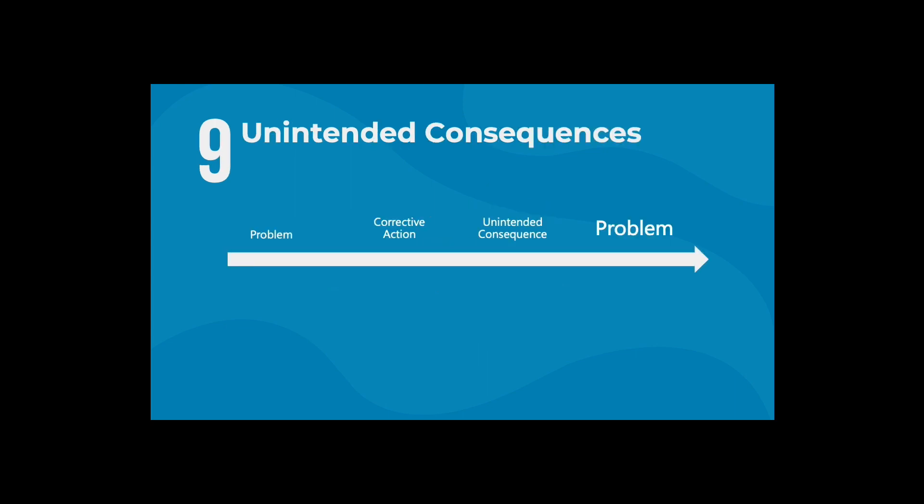The ninth archetype is called unintended consequences. It's very simple. A solution is quickly implemented to address the symptoms of an urgent problem. And this quick fix sets into motion unwanted or unanticipated consequences that weren't obvious at first, but end up adding to the symptoms, thus creating a bigger problem.